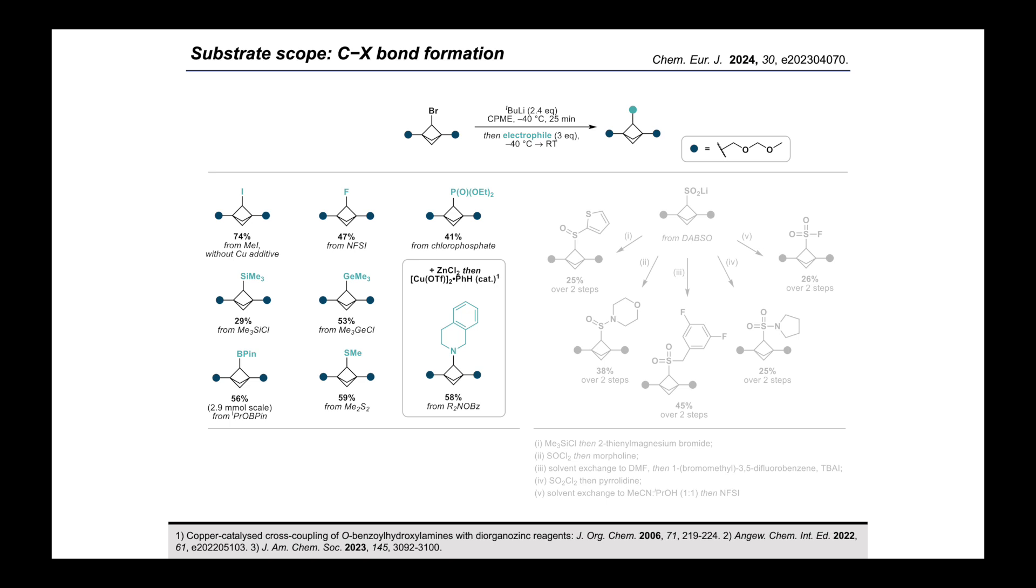After transmetallation to zinc again, then in the presence of a copper catalyst this time, we also achieved catalytic C-N bond formation by reaction with O-benzoyl hydroxylamines as a source of electrophilic nitrogen. This result is also worth highlighting, since the only existing divergent C-N bond-forming procedure at the BCP bridge positions is that reported by the MacMillan group that we saw earlier, and this is limited to the use of NH-acidic nitrogen heterocycle nucleophiles only.